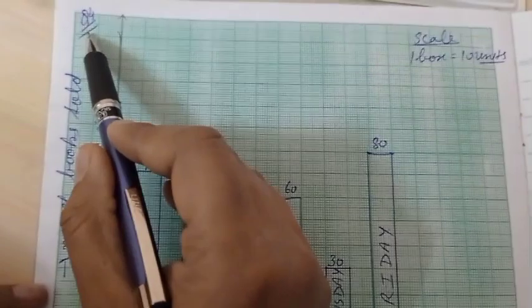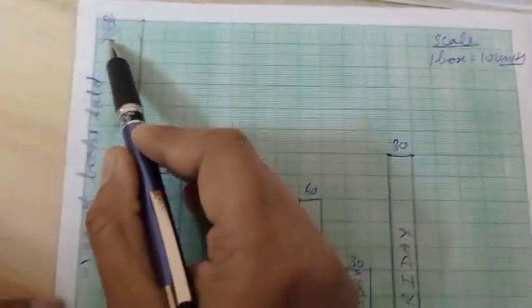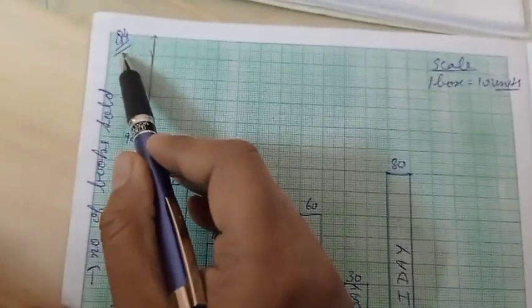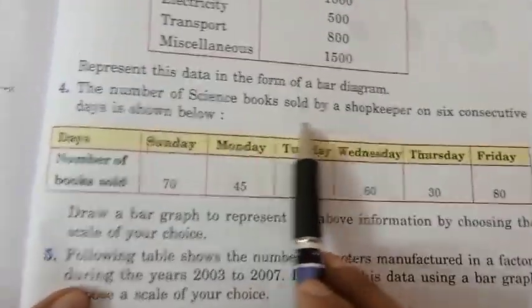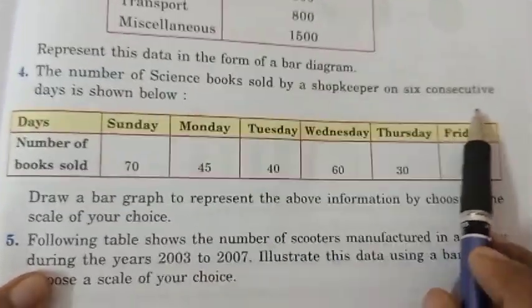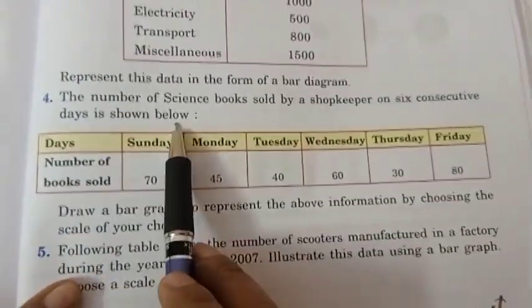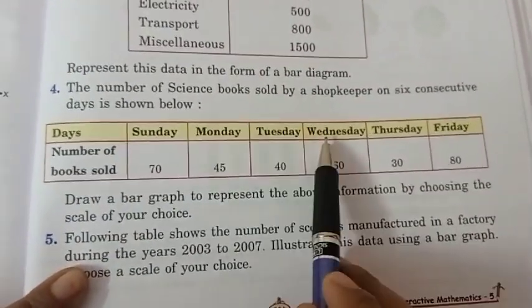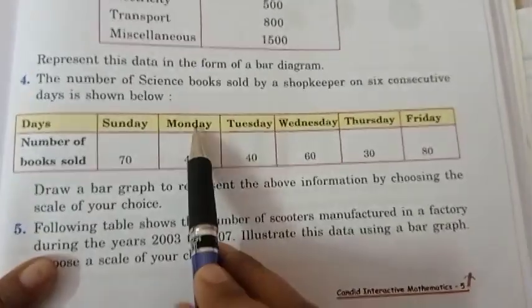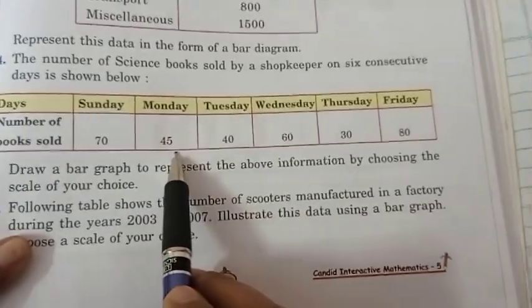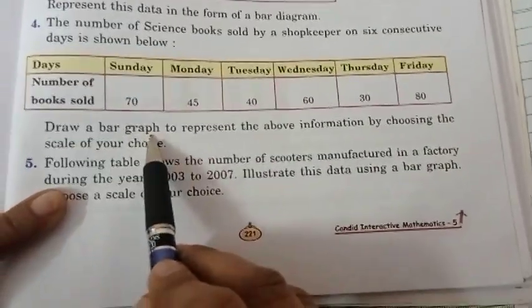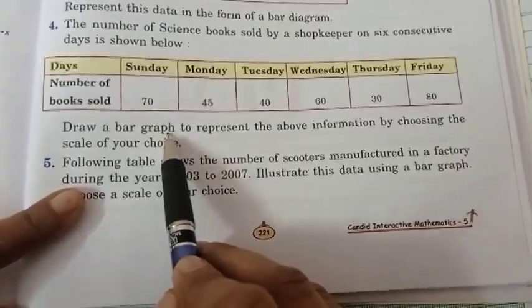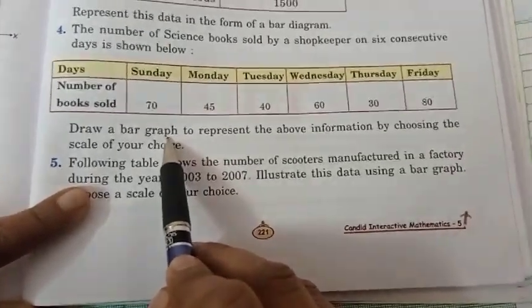By mistake I solved the fourth question first, so let's now do the third question. The number of science books sold by a shopkeeper on six consecutive days is given: Sunday — 70 books were sold, Monday — this many books, Tuesday — 40, and so on. Now you have to draw the bar graph yourself.